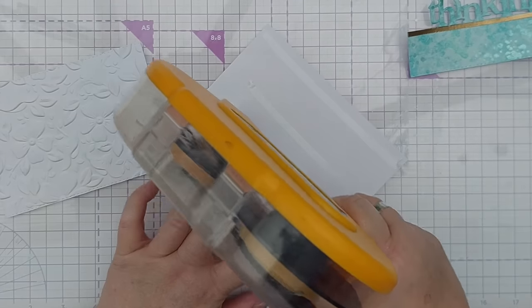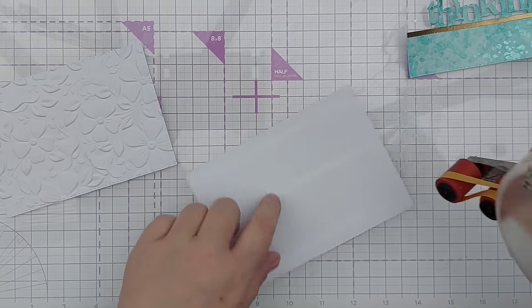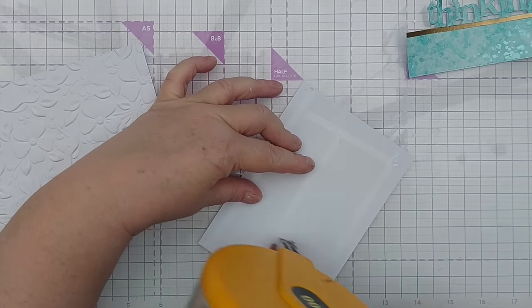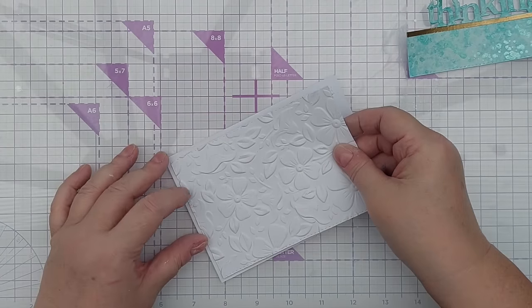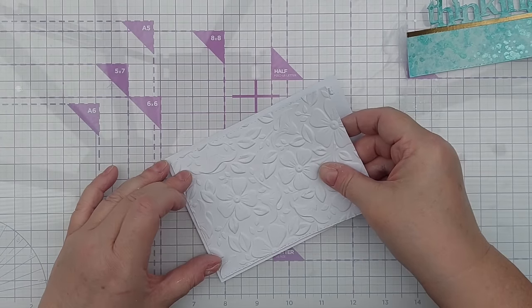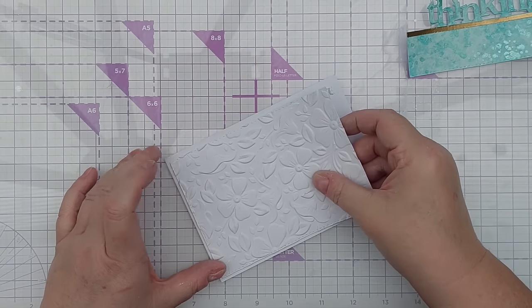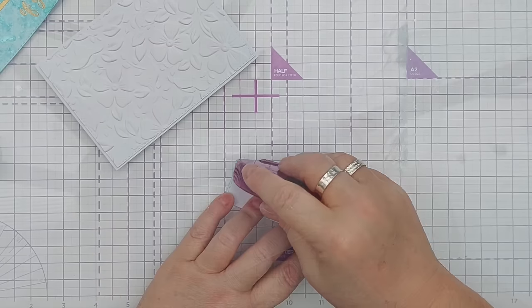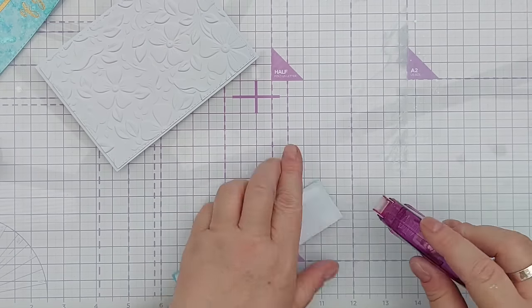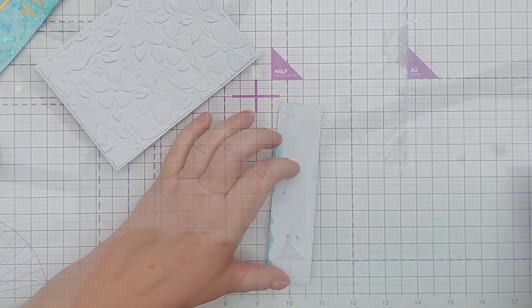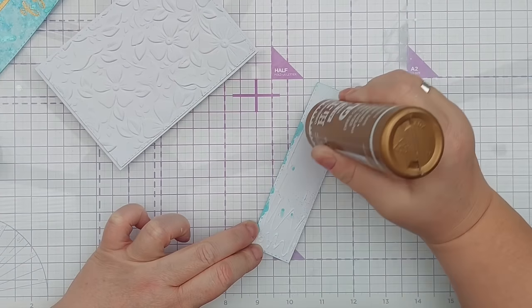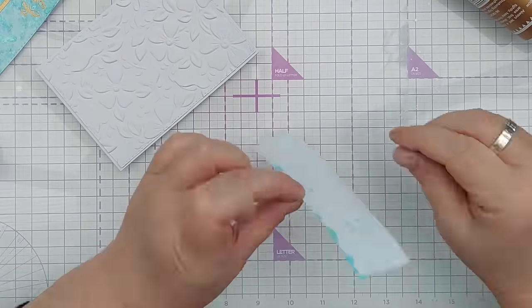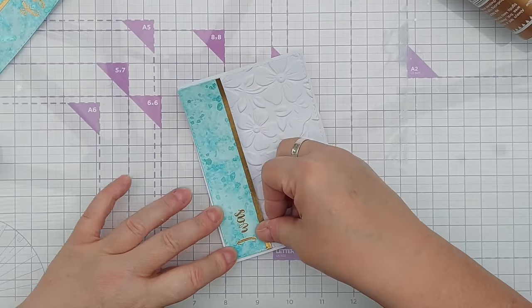But I wanted some texture so I took a 3D embossing folder and embossed a piece of smooth white card. I stuck that to a card blank and then I added my colourful strips. And to adhere these two colourful strips to my 3D embossed piece I used tape runner and glue and that just makes sure there's enough adhesive on the back making contact with the embossed panel.